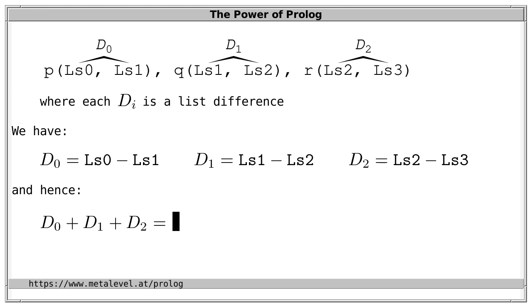What about the concatenation of these, that is, what about D0 plus D1 plus D2? Let's sum these terms. We have LS0 minus LS1 plus LS1 minus LS2 plus LS2 minus LS3, right?